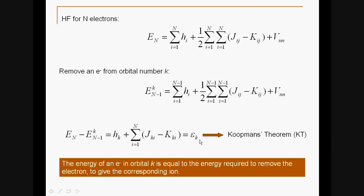You will end up with epsilon K, which is actually the energy of orbital K. This is the essence of Koopmans' theorem, often abbreviated as KT. Let's formally state it: the energy of an electron in orbital K is equal to the energy required to remove the electron to give the corresponding ion.